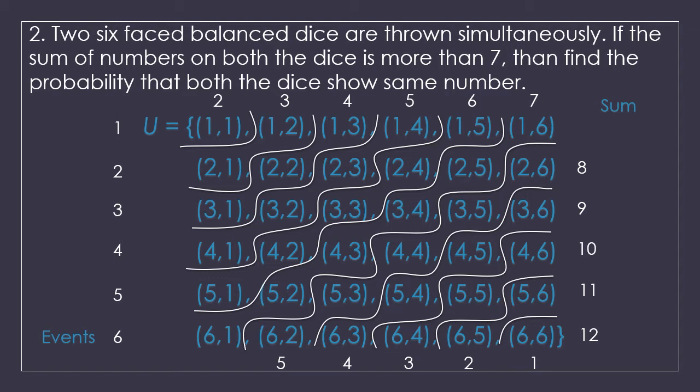Looking at the dice table, we have to think about two things. For event A, the sum more than 7 covers sums of 8, 9, 10, 11 and 12. Counting those outcomes: 5 + 4 + 3 + 2 + 1 = 15. So there are 15 outcomes where the sum is more than 7. For event B, showing the same number, those are: (1,1), (2,2), (3,3), (4,4), (5,5) and (6,6) — 6 outcomes in total.